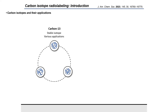We can showcase its application in earth science or in urea-based tests, but above all, it is an essential tool for organic chemists in chemical structure elucidation using carbon NMR. The other one is carbon-11, which is a beta-plus emitter with a half-life of 20 minutes.